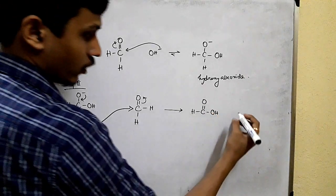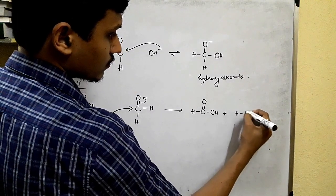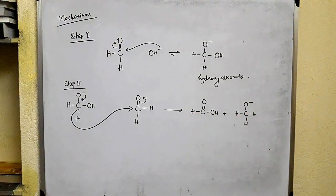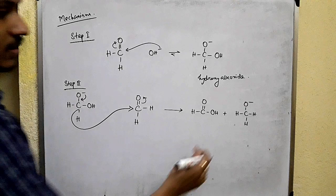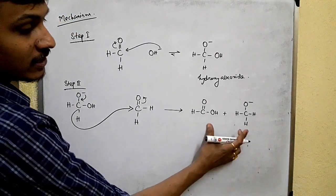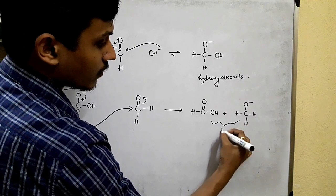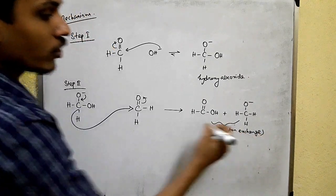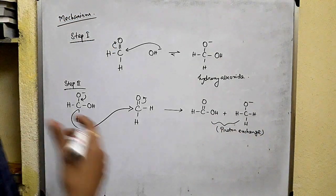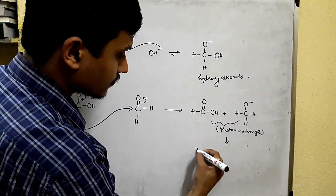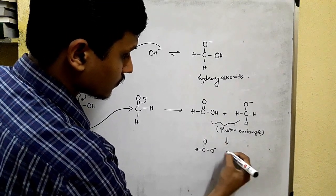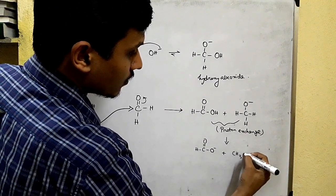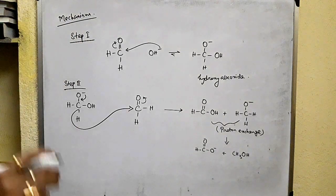We get HCOOH — that is formic acid — plus another alkoxide ion. Then proton exchange occurs between these two species to acquire stability, and finally formate and the alcohol methanol are formed.